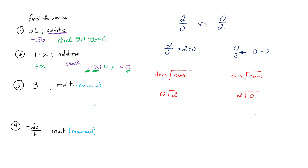Now let's look at the third problem — they want the multiplicative inverse, which means they're looking for the reciprocal. I need to write 3 as a fraction: 3 over 1. Remember, it does not change signs, so since this 3 is positive, the multiplicative inverse remains positive. The only thing switching is the numbers, so it's going to be positive 1 third. The check: positive 3 over 1 times positive 1 over 3 — they cancel out and equal 1.